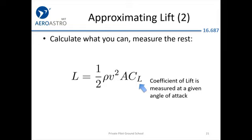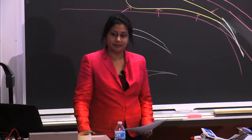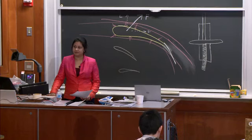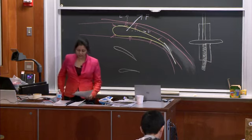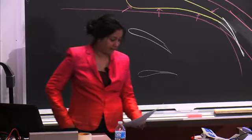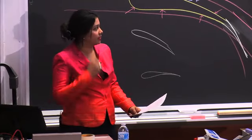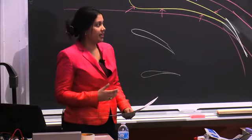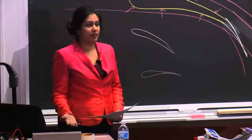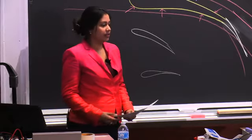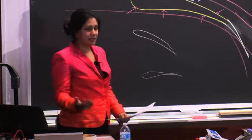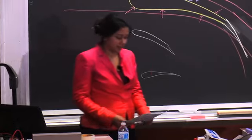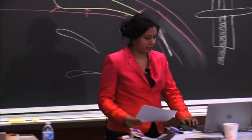Note that velocity is squared in the lift equation — so if you go twice as fast, you get four times as much lift. The coefficient of lift is measured for a given angle of attack, so let's get into defining angle of attack in a bit more detail.